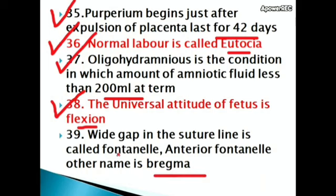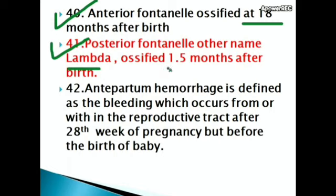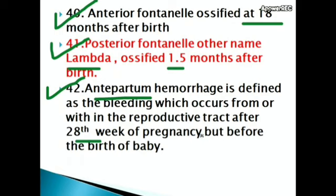Anterior fontanelle's other name is bregma; it ossifies at 18 months after birth. Posterior fontanelle's other name is lambda; it ossifies one and a half months after birth. Antepartum hemorrhage is defined as bleeding which occurs from or within the reproductive tract after the 28th week of pregnancy but before the birth of the baby.